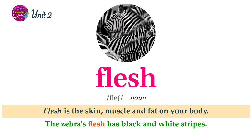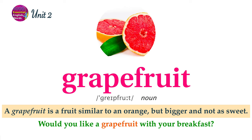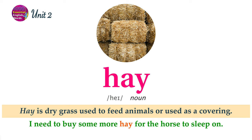Flesh is the skin, muscle, and fat on your body. The zebra's flesh has black and white stripes. A grapefruit is a fruit similar to an orange, but bigger and not as sweet. Would you like a grapefruit with your breakfast? Hay is dry grass used to feed animals or used as a covering. I need to buy some more hay for the horse to sleep on.